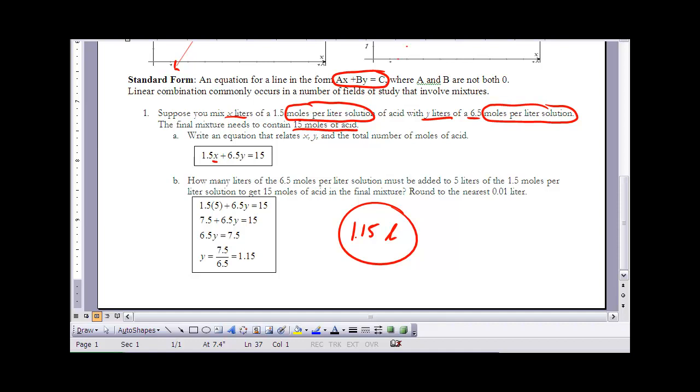So if I take the 1.5 times however many liters I have of the 1.5 solution, that will give me the number of moles of acid from the X solution. And if I take 6.5 times the number of liters of that solution, that will give me the number of moles of acid from that solution. So if I add those two together, that basically tells me how much acid I have. So what I want to do is I want to make sure that I have 15 for the acid. So this linear combination, which is a linear equation written in standard form, that represents the mixture to get 15 moles of acid.